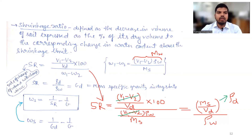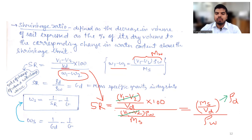Shrinkage ratio is the rate of change of volume with change in water content. It is defined as the decrease in volume of soil expressed as a percentage of dry volume, corresponding to a change in water content. Shrinkage ratio equals ρd / ρw, which can also be written as Gd — the mass specific gravity in dry state. From the previous expression, shrinkage limit Ws = 1/Gd − 1/G, which is an important expression for solving numerical problems.